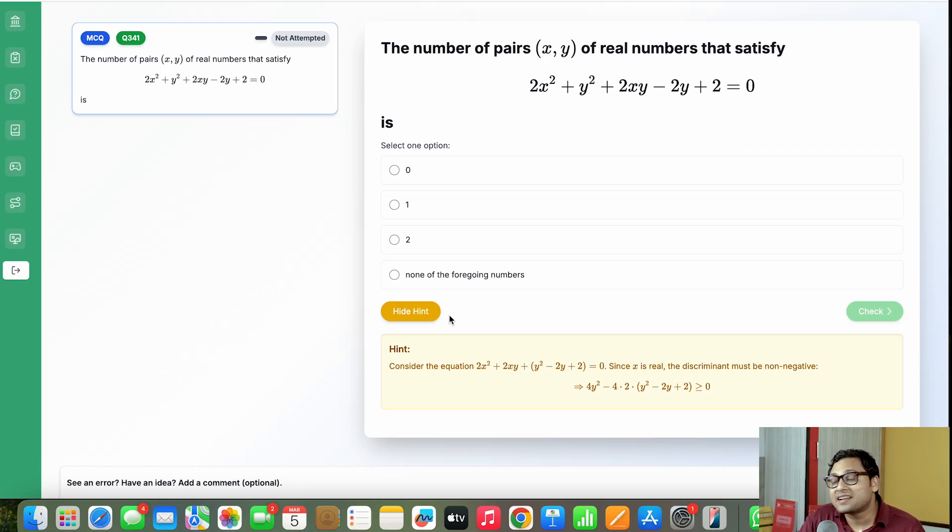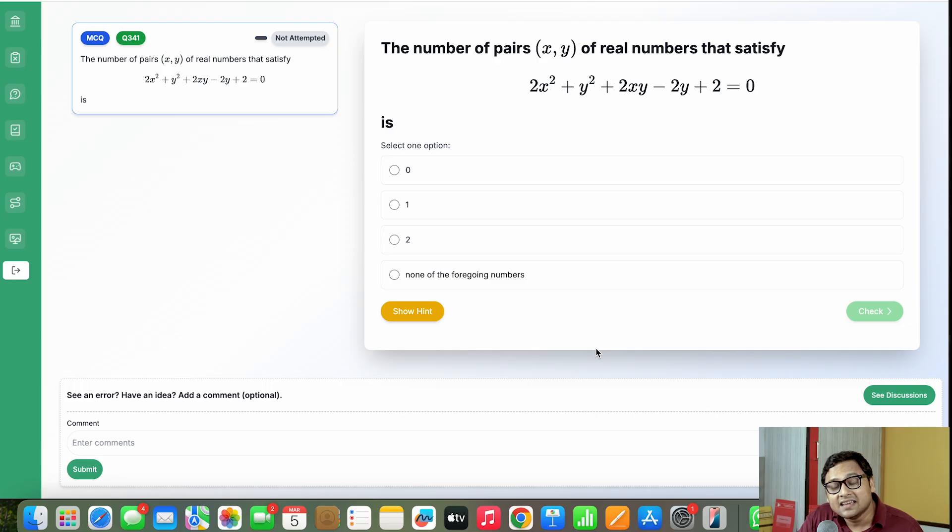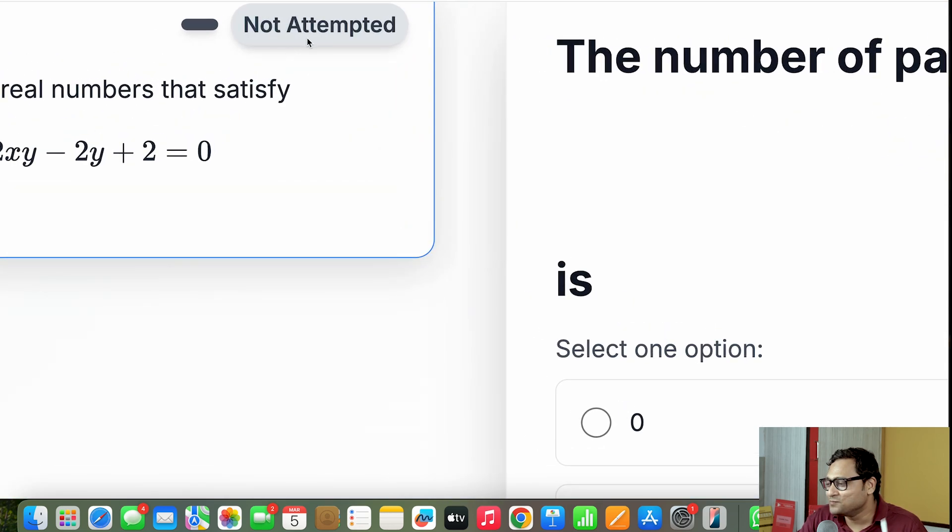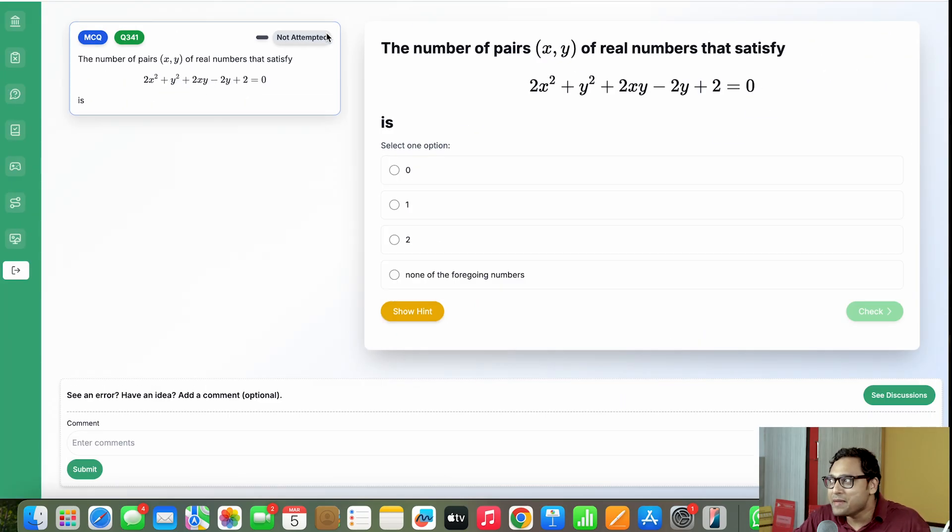But after trying the problem, if you're unable to do it, even with the hint, you will have an opportunity to look at the solution. But again, no one has learned beautiful mathematics by looking into solutions. So try the problems on your own. Use the hint if necessary. Now, once you do it, this particular toggle will change from not attempted to attempted. So hopefully by the end of May or June, up to the ISI and CMI entrances, you will be able to complete all the not attempted to attempted.